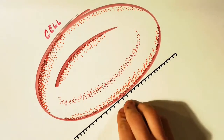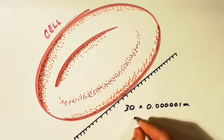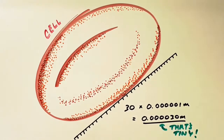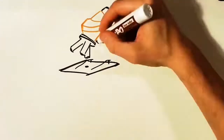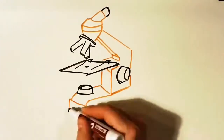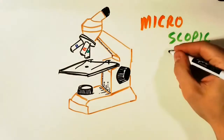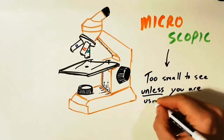Using the power of 10 again: if we take 30 and multiply it by one millionth of a meter, or a micrometer, we get 0.0000030 meters. The term microscopic might ring a bell — any object that's microscopic is too small to see unless you have a tool called a microscope.